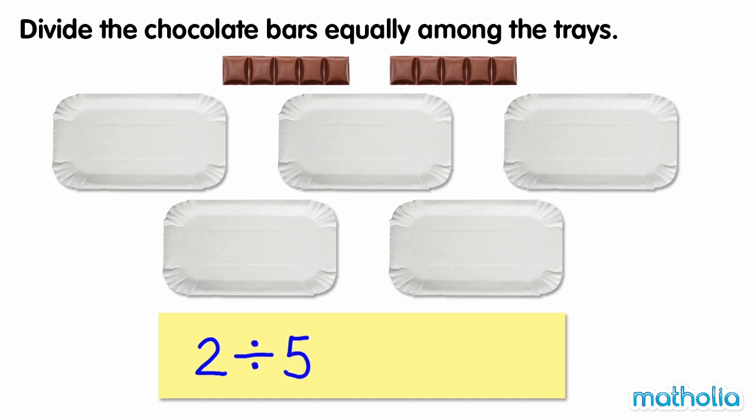Each chocolate bar is made up of five pieces of chocolate. Let's divide the chocolate among the trays by placing one piece on each tray until we have used up all of the pieces.